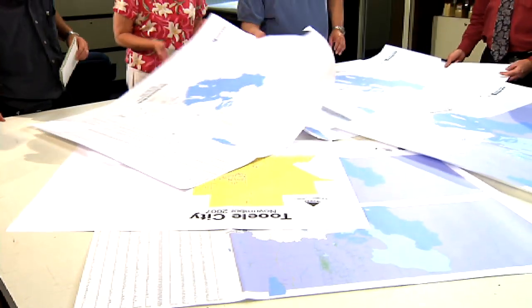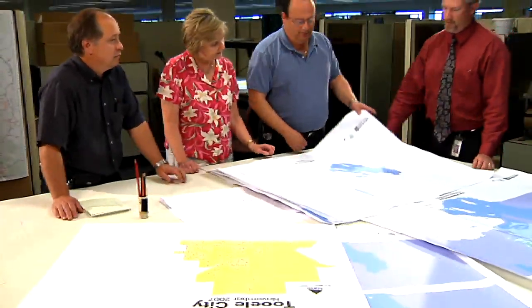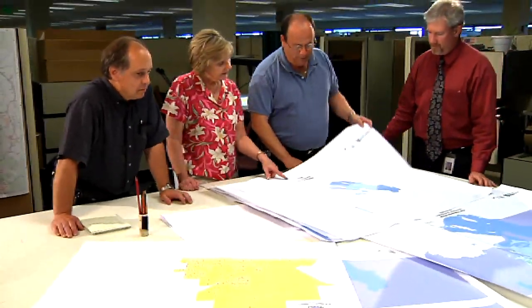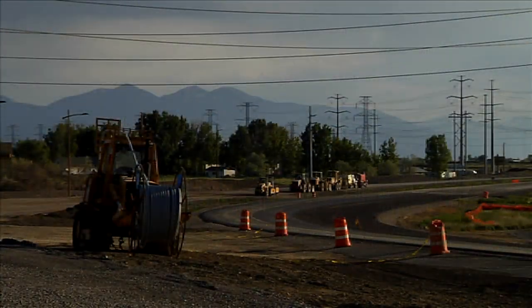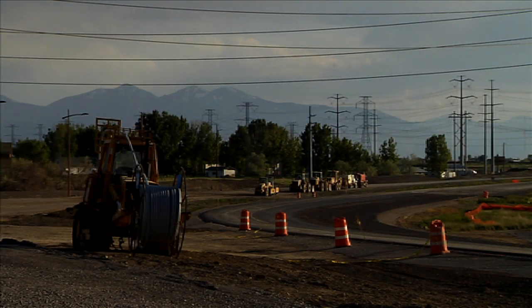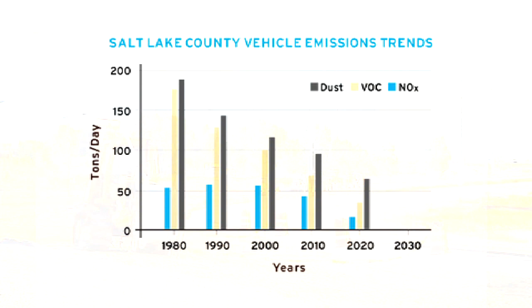As measures become more strict, the possibility of a conformity lapse becomes greater. If that happens, we will need to reduce the mix, or timing, of project construction and also work very closely with the Division of Air Quality to ensure the emission budgets in the SIP are attainable and the flow of transportation funding continues. Continued diligence to today's standards will keep us from the danger of not conforming. In fact, Utah has been able to target specific emissions for reduction, but still has work to do.